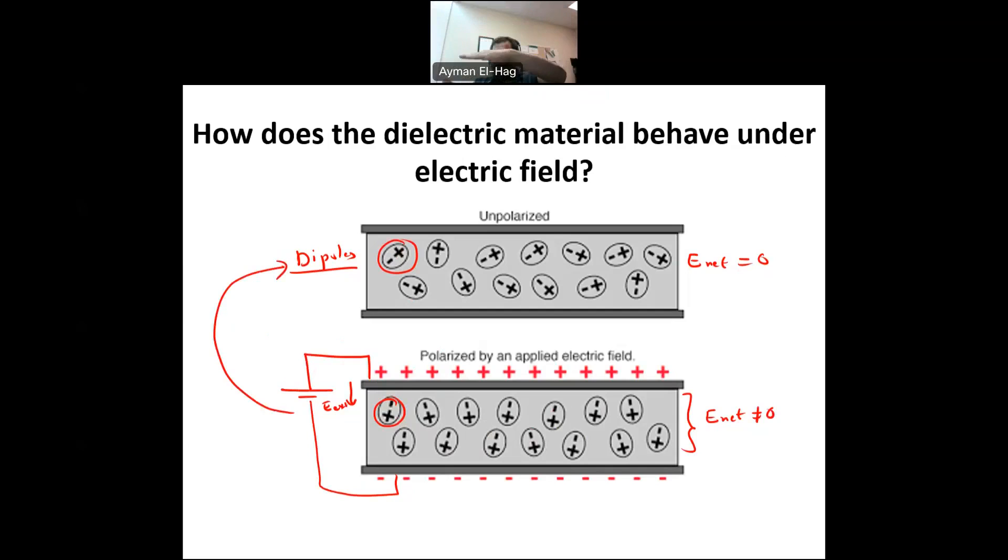You compress the string by external force. Here, you align the dipoles by an external force, which is here, the electric field. Once you release them, this stored energy has to be released outside, same like the spring, and same here like the capacitor. Now, with this fundamental understanding, how we store the energy inside the capacitor, let's see how the electric constant impact that.